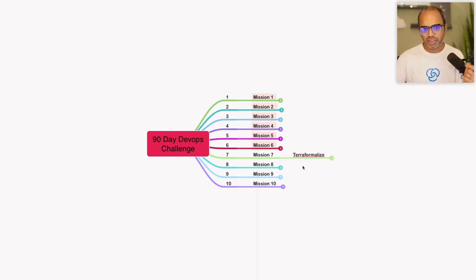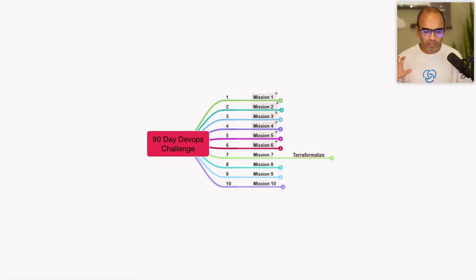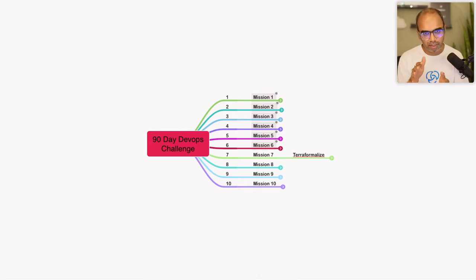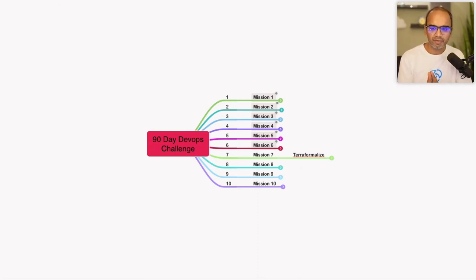Today we're going to continue that journey with automating cloud provisioning using Terraform — one of the most interesting and exciting tools in DevOps today. Terraform is about infrastructure as code: automating cloud infrastructure in general. It really shines because it integrates with different cloud platforms and is not specific to just one, unlike CloudFormation or Ansible. It can automate cloud components like compute, databases, networking, and more.